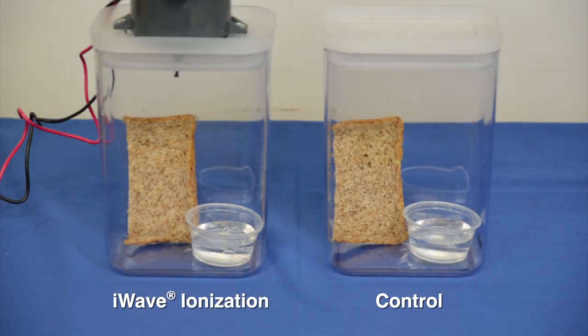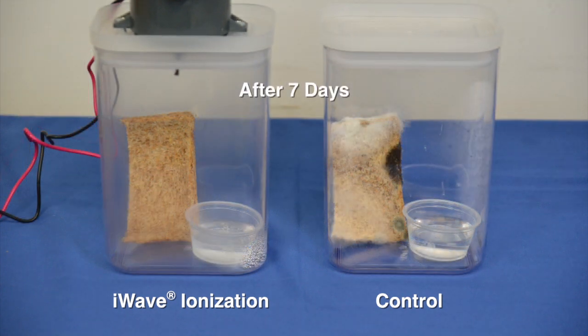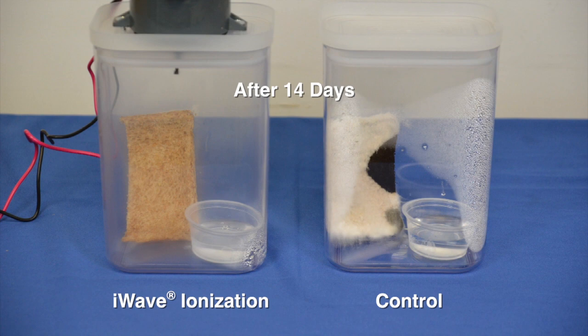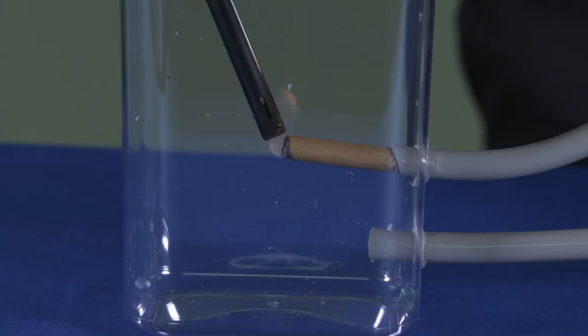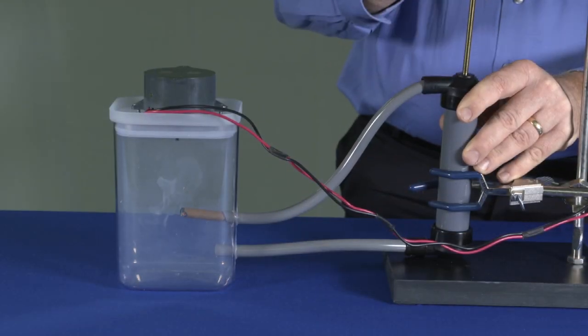A simple demonstration shows how iWave prevents mold from growing on bread over time. This shows how the products address pathogens downstream of the device, at the coil, and in the living space. Another demonstration shows how iWave products remove smoke from the air stream within a short period of time.